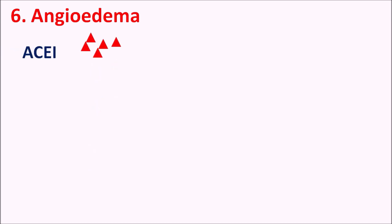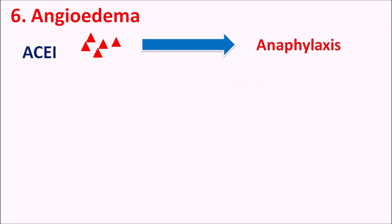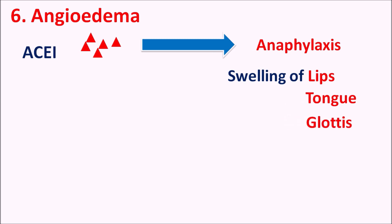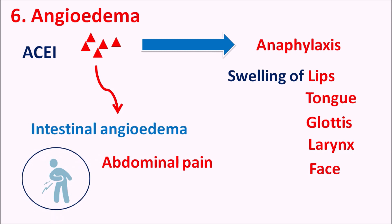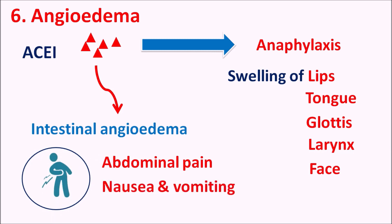The sixth side effect is angioedema, a hypersensitivity reaction. ACE inhibitors can produce anaphylaxis resulting in swelling of the lips, tongue, glottis, larynx, and face. These anaphylactoid reactions occur due to hypersensitivity. They can also produce intestinal angioedema, resulting in abdominal pain, nausea, and vomiting. Although these side effects are rarely observed, caution should be taken to monitor any development of angioedema in patients.